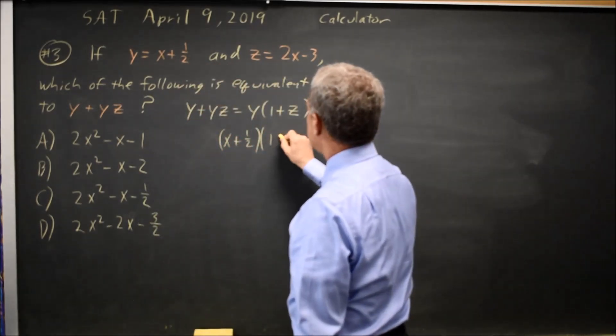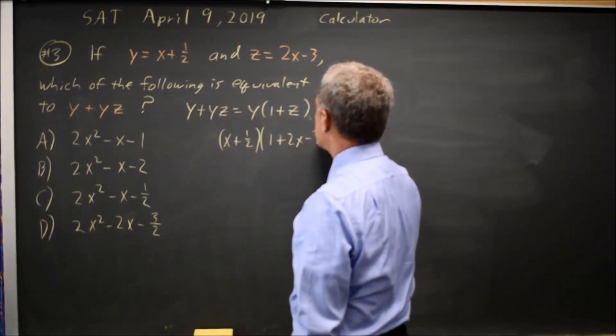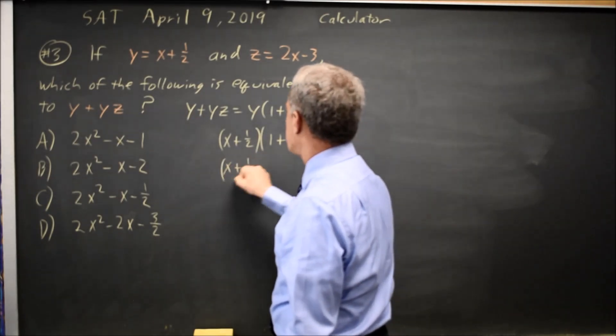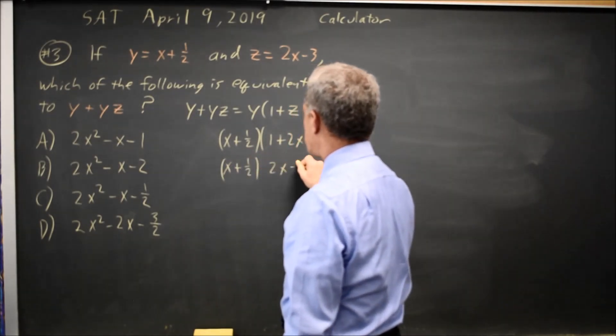1 plus z is 1 plus 2x minus 3, so that's x plus 1 half, times 2x minus 2.